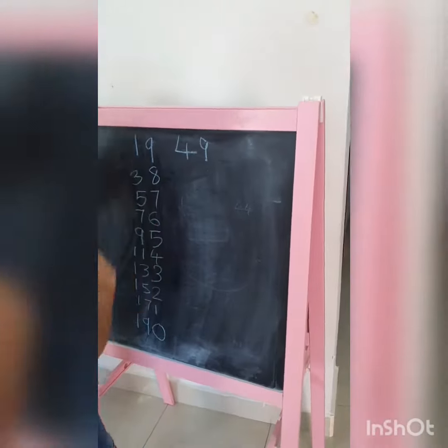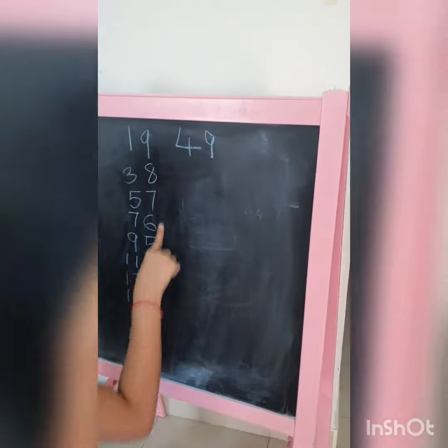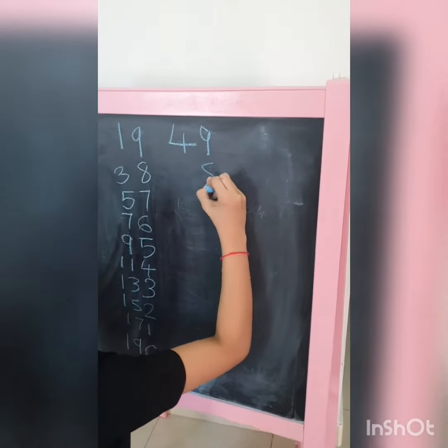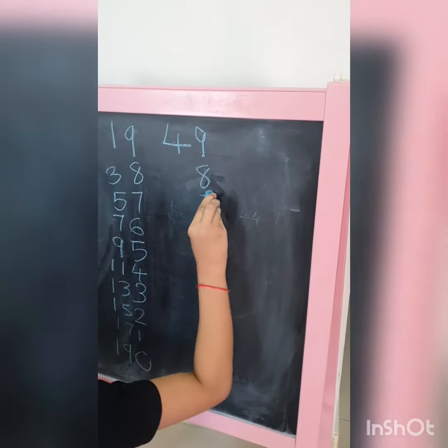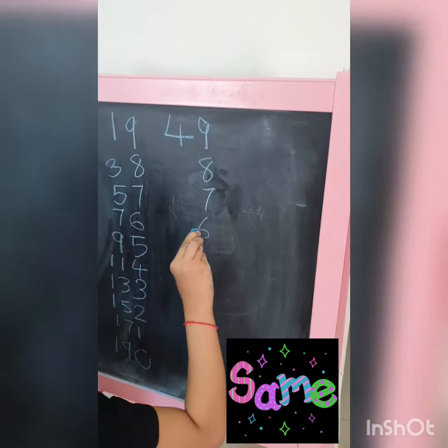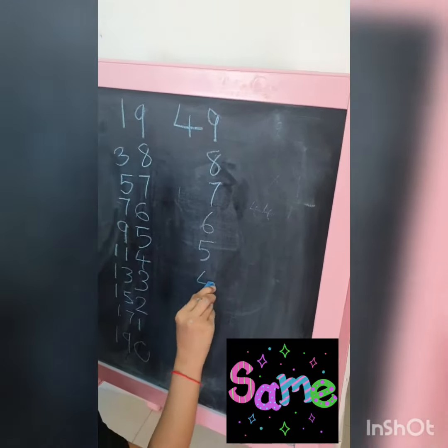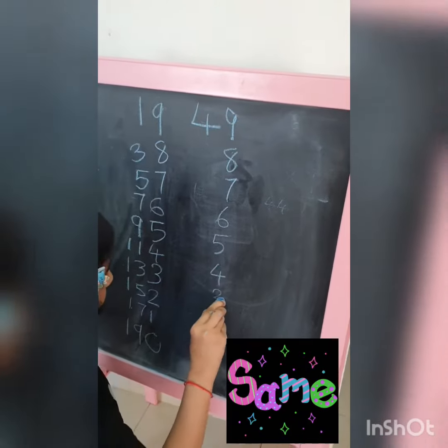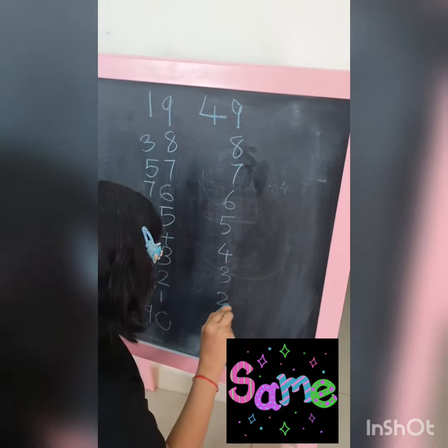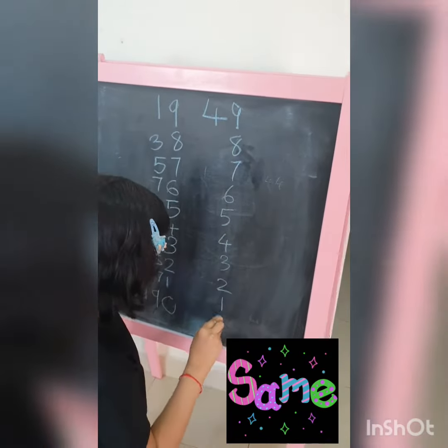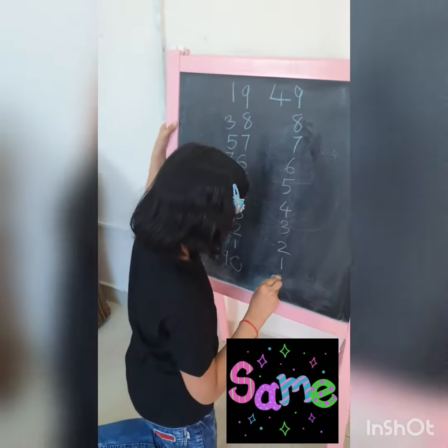Now we will do the same trick. We write the units digits counting down: 8, 7, 6, 5, 4, 3, 2, 1, and 0.